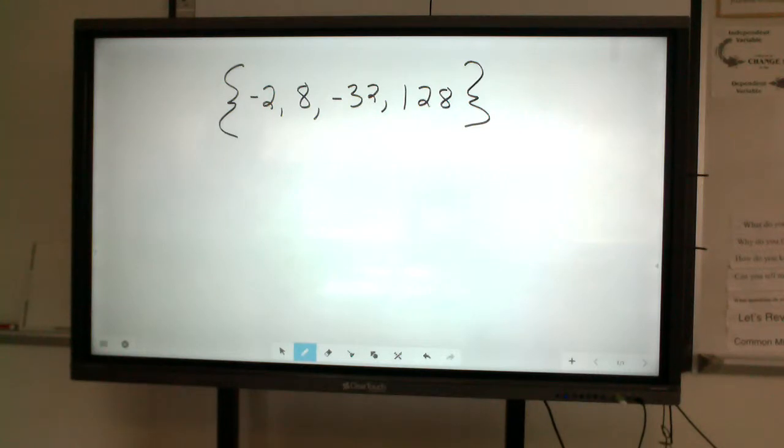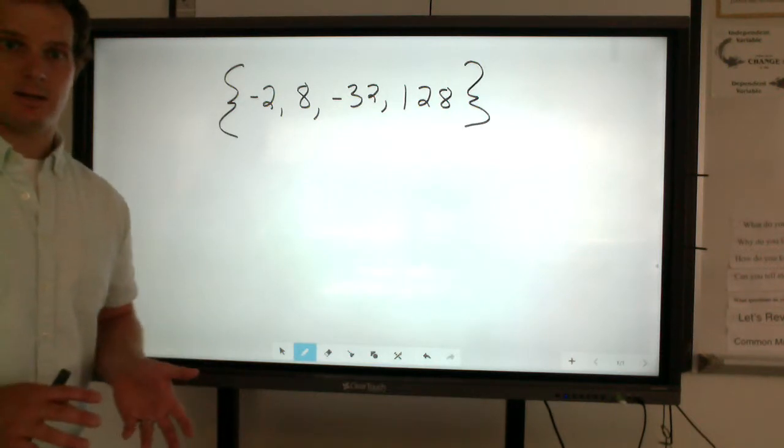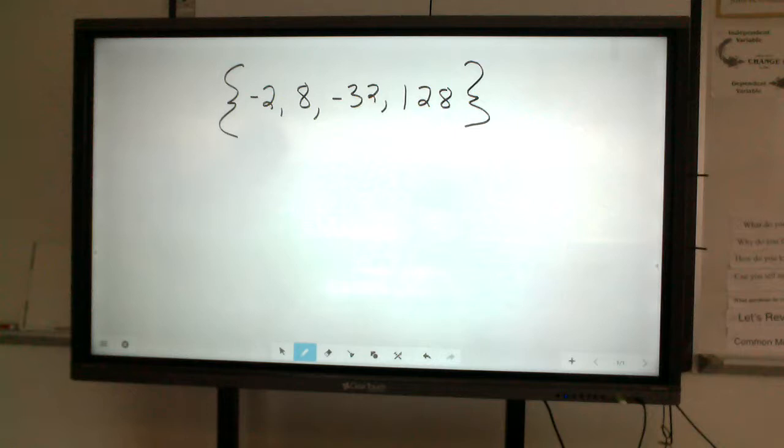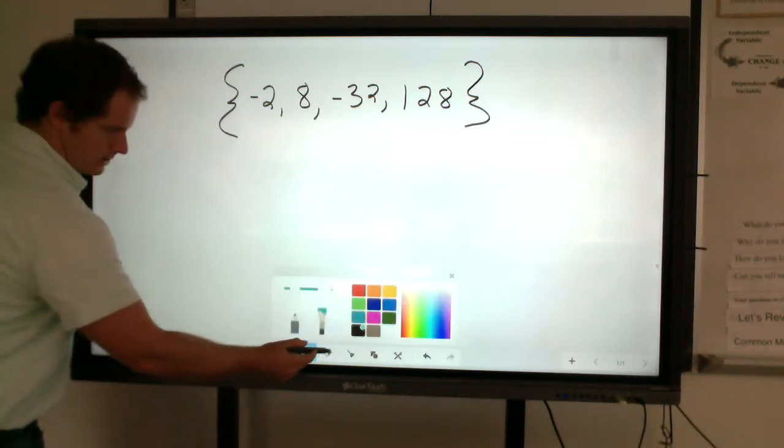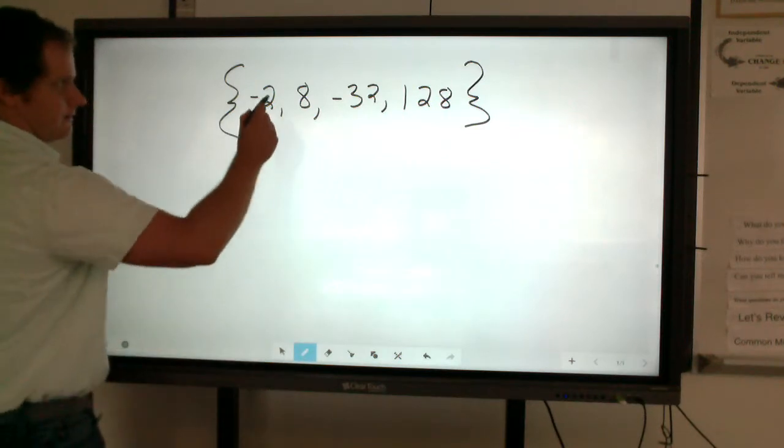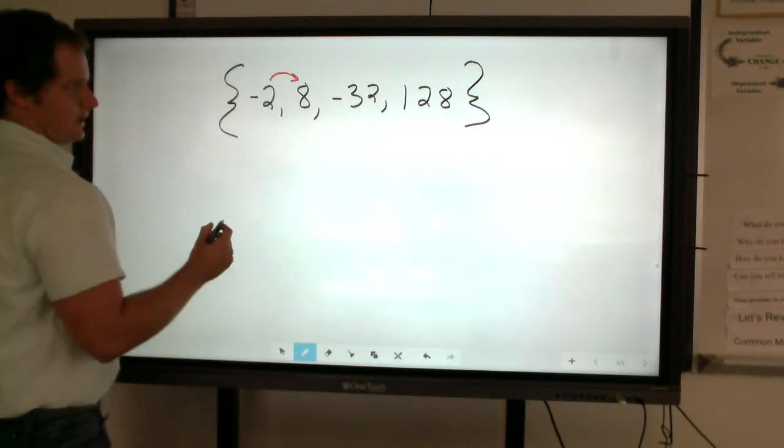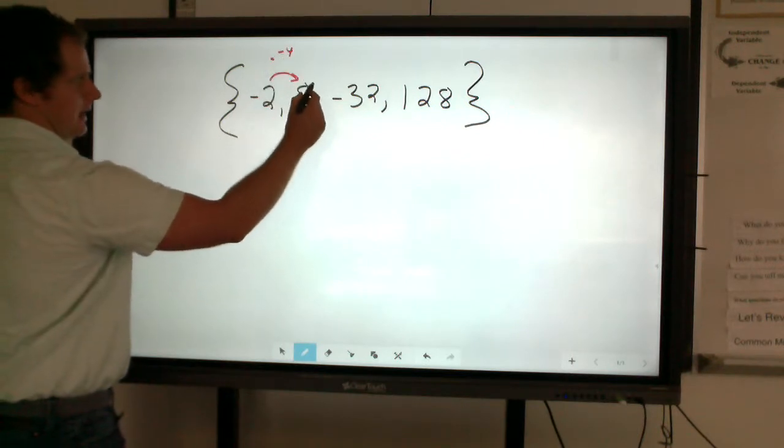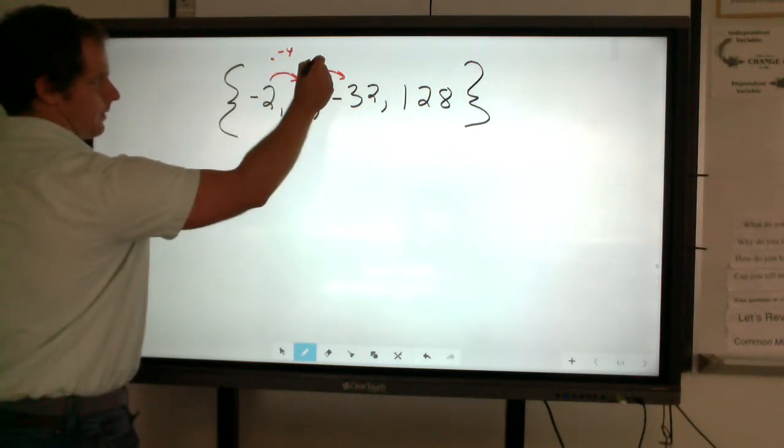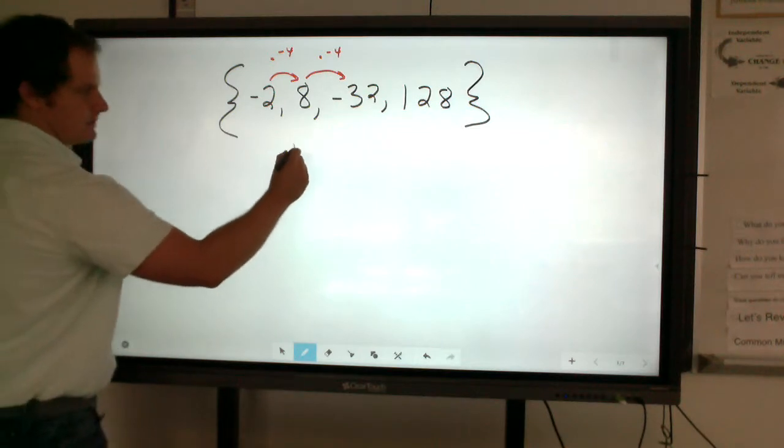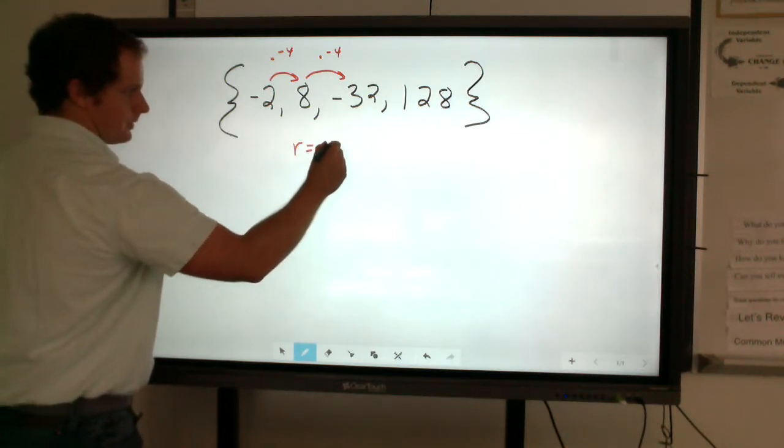Now, for this, one of the telltale signs that it is going to be geometric is obviously that the values are increasing, but also seeing that positive negative lends itself to being something that's geometric. And what you find here is that if we want to find that common ratio, you're going to notice that, how do I get from negative 2 to 8? I have to multiply by negative 4. How do I get from 8 to negative 32? I'm multiplying by negative 4. That negative 4 is the common ratio.